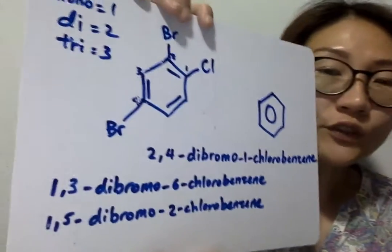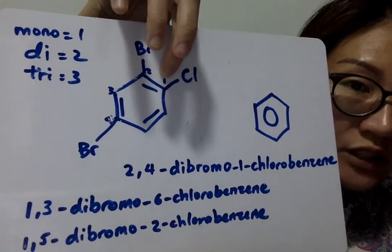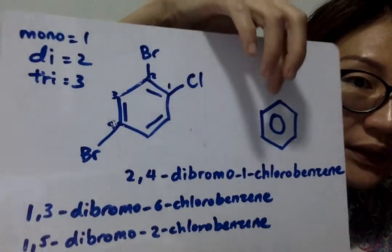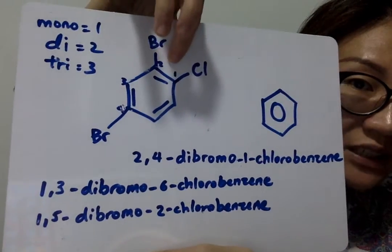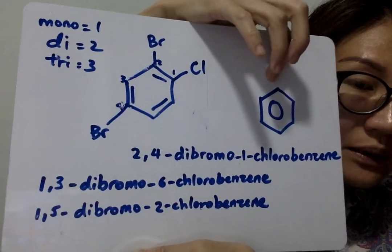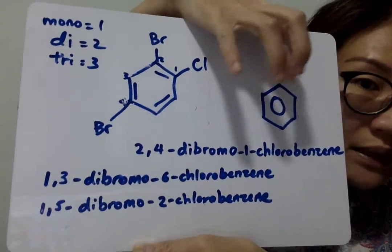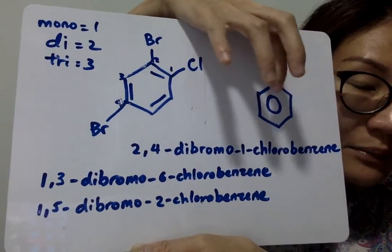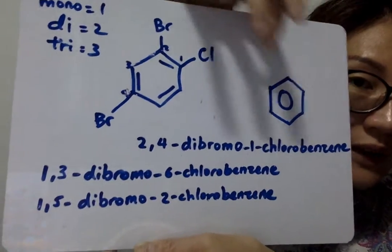Draw the structure of 2,4-dibromo-1-chlorobenzene. I've just drawn the structure for you. You can either use the Kekulé structure or the delocalized structure, which means you can replace the Kekulé structure with the delocalized structure with the ring in the middle. Both are correct structures.